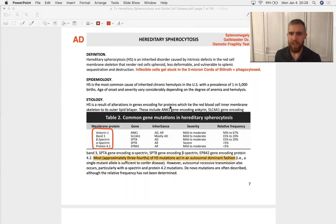What's the gist of it? Inflexible cells get stuck in the two micron cords of Billroth and they get snapped up by macrophages of the spleen and phagocytosed.